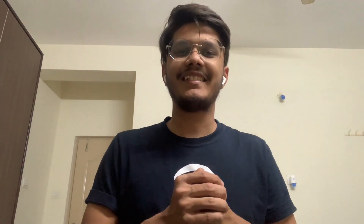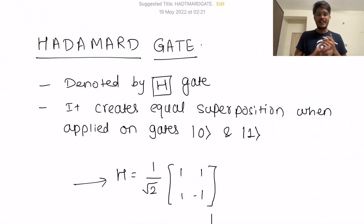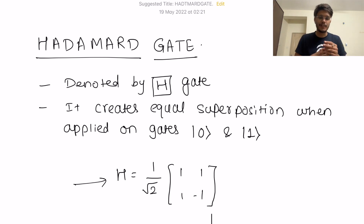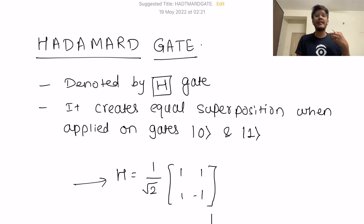In this video we are going to talk about the Hadamard gate and learn more about it. So since the beginning we have been talking about the superposition state in quantum computing. What is very special about it, and how to transition your normal state to a superposition state? A superposition state is where a qubit can be in multiple states simultaneously, having different probabilities of being in different states.